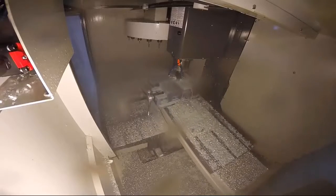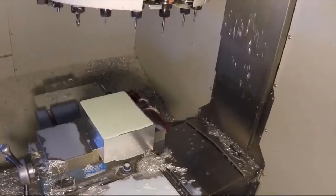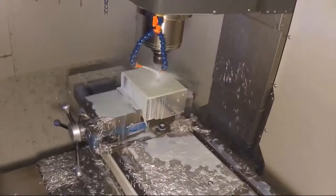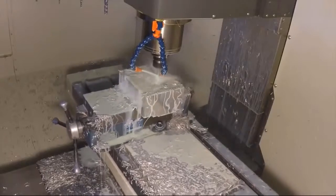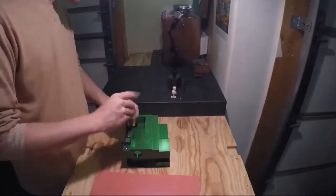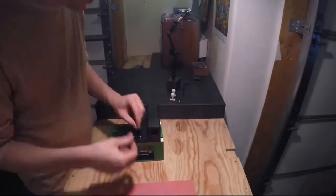The Pocket NC is made from only billet alloy aluminum and the most quality components of their type. Our way of making machines may not be the fastest or the cheapest, but it yields the best possible product, and we definitely have an appreciation for doing things the right way.